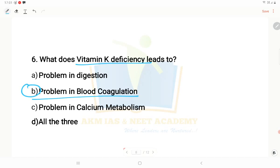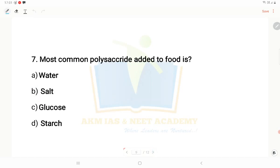Seventh question: Most common polysaccharide added to food? Polysaccharide in food is starch. Glucose is monosaccharide.